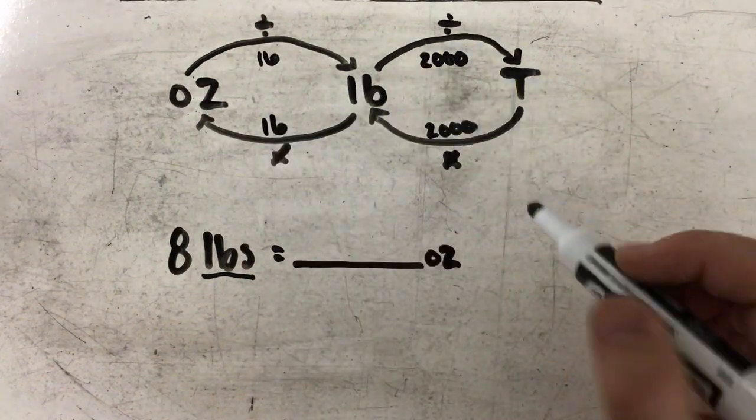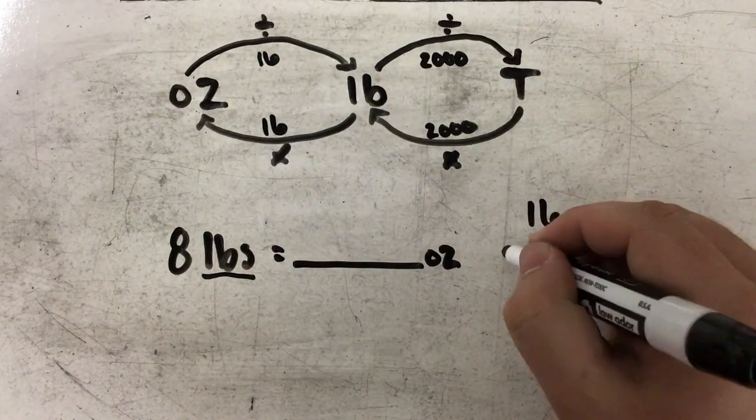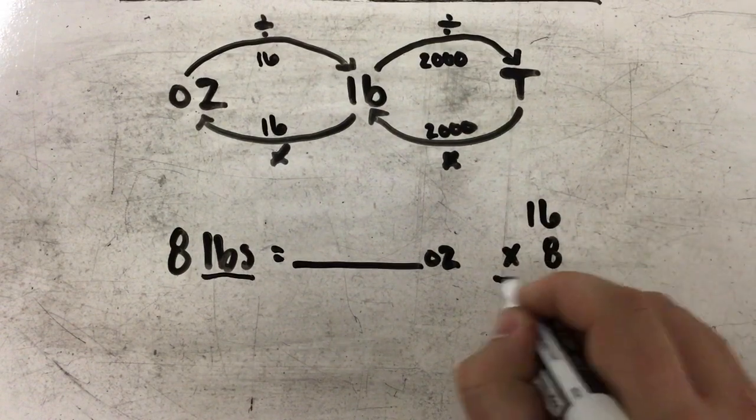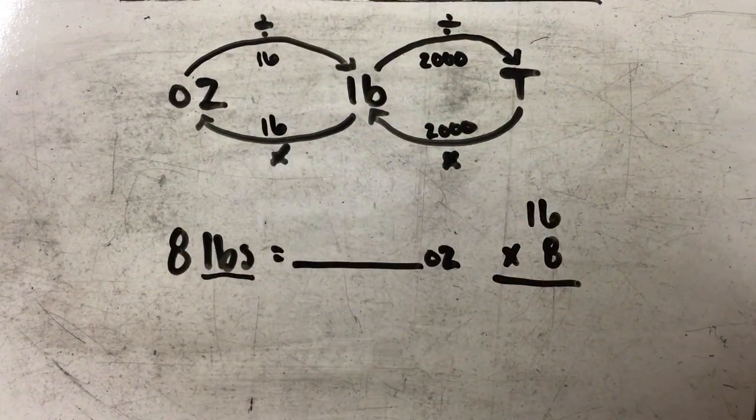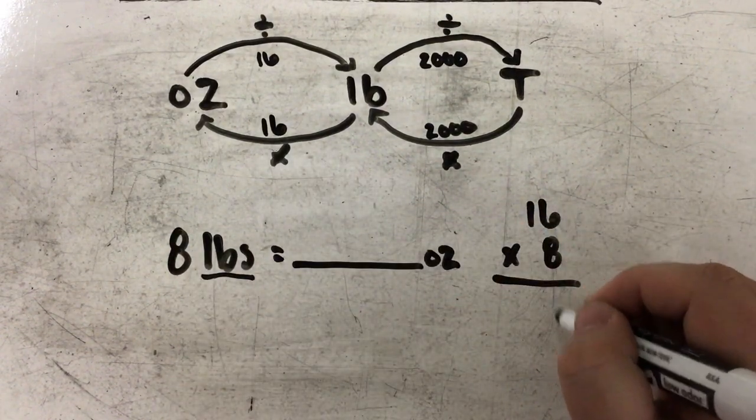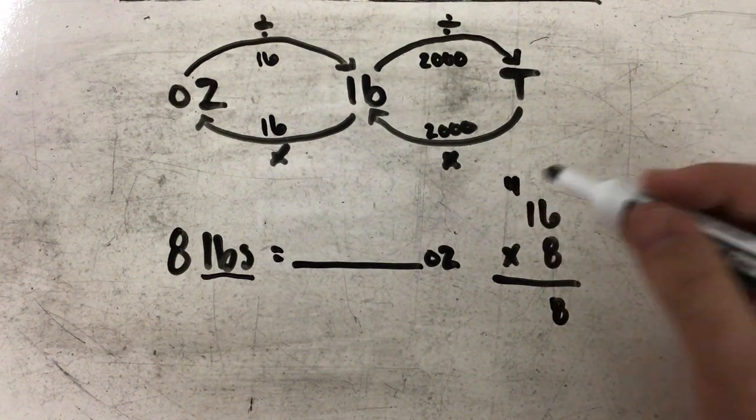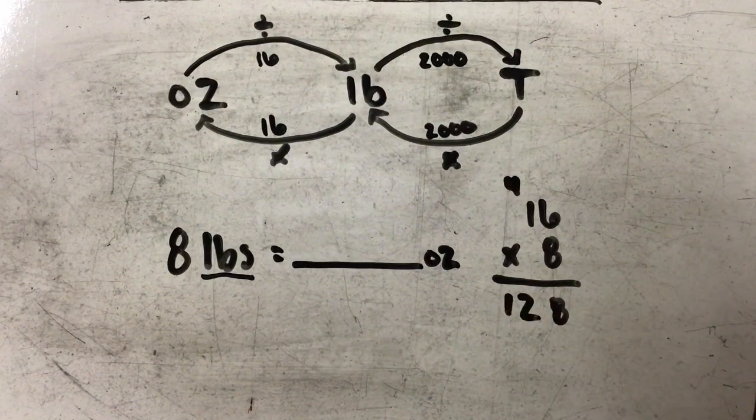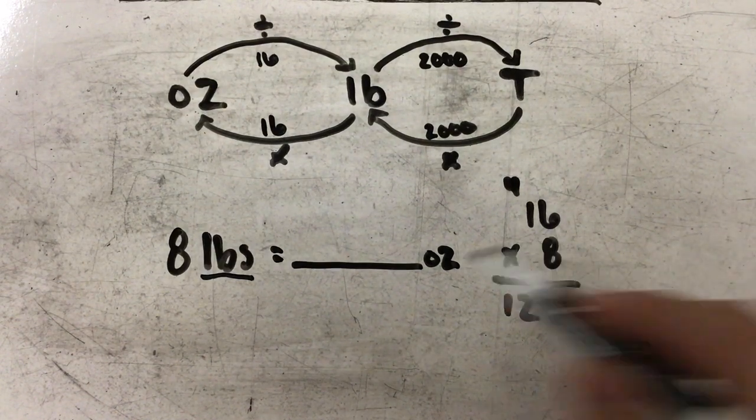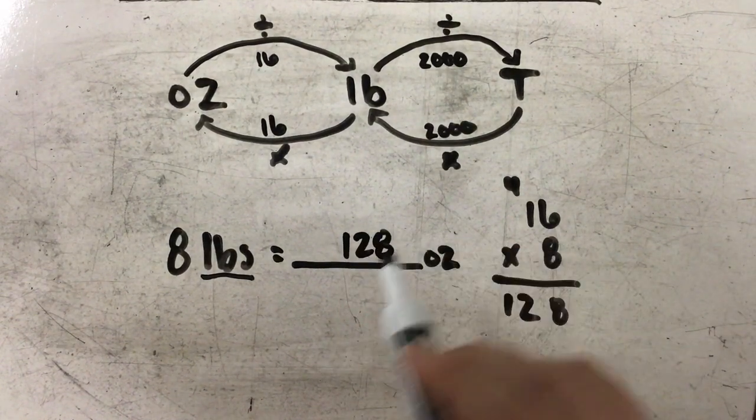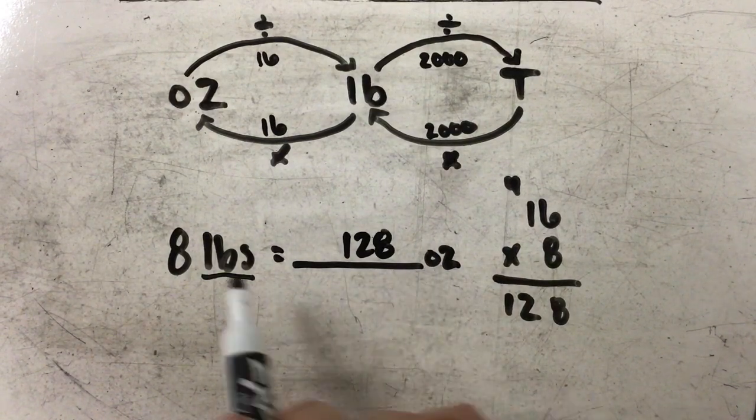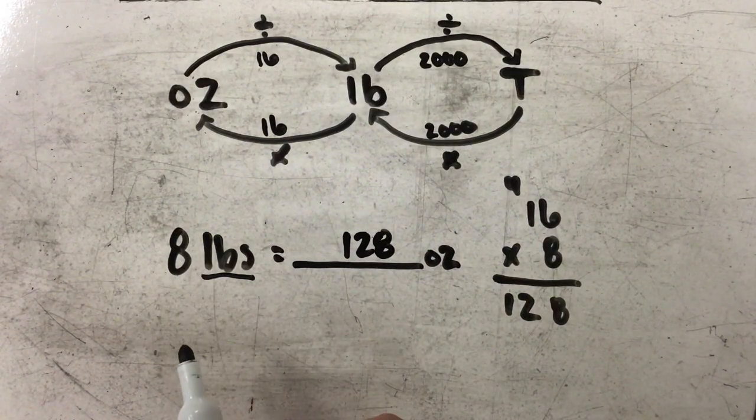So I'm going to pull that out over here: 16 times 8. 8 times 6 is 48. 8 times 1 plus 4 is 12. So my answer is 128. There are 128 ounces equal to 8 pounds.